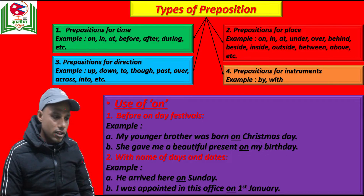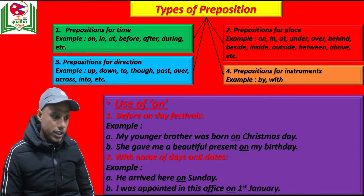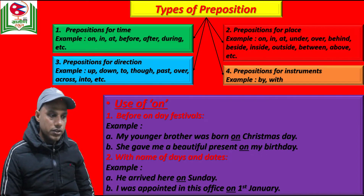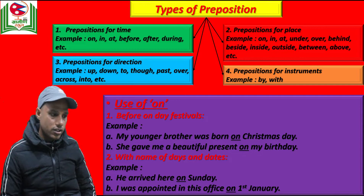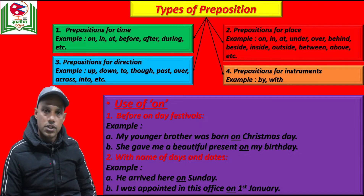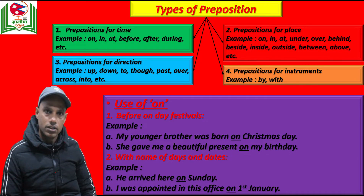First of all, we will discuss the various uses of preposition 'on'. We can use preposition 'on' in different conditions. The first condition is before the name of festivals — especially one-day festivals. Before the name of one-day festivals, we use preposition 'on'. For example: my younger brother was born on Christmas day. Another example: she gave me a beautiful present on my birthday. Festivals like Christmas day, birthday, holiday — we generally use preposition 'on'.